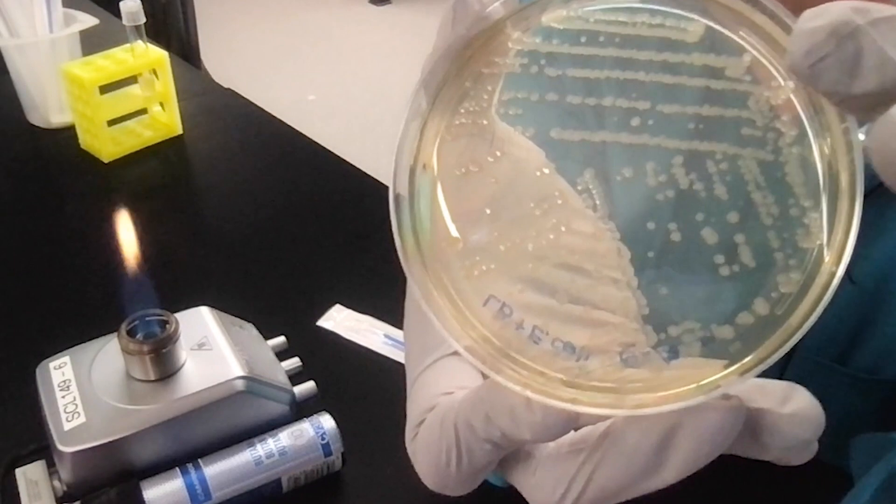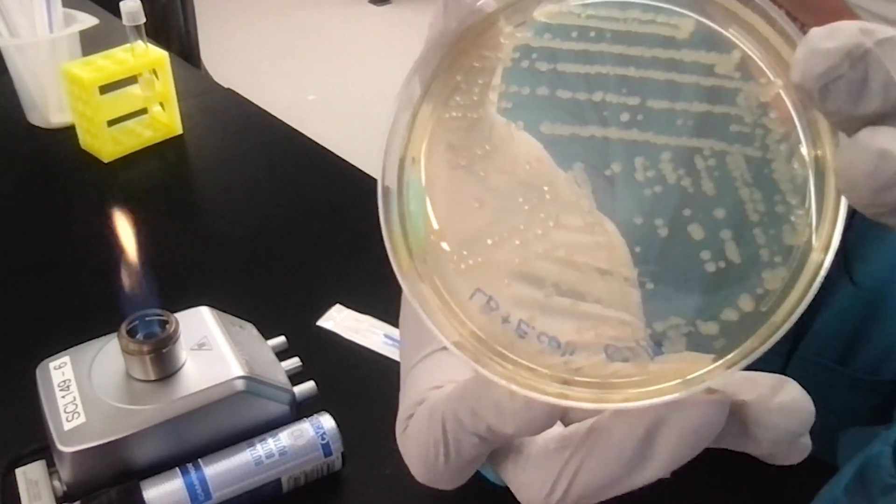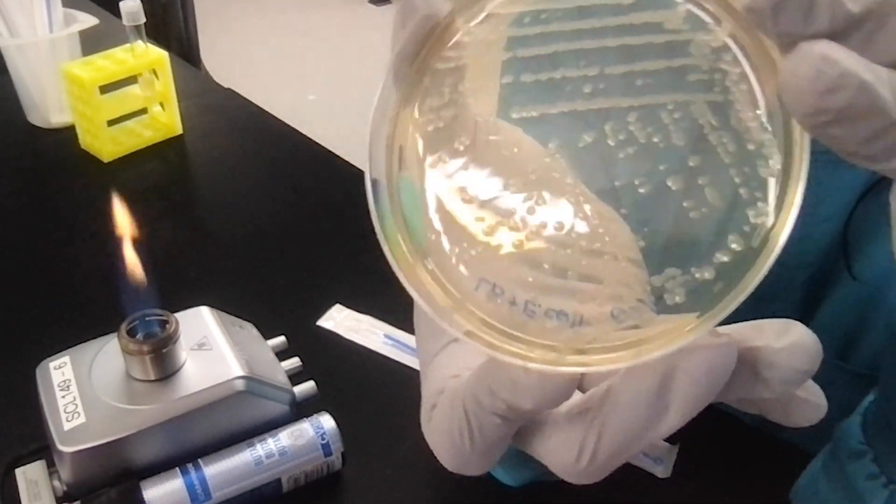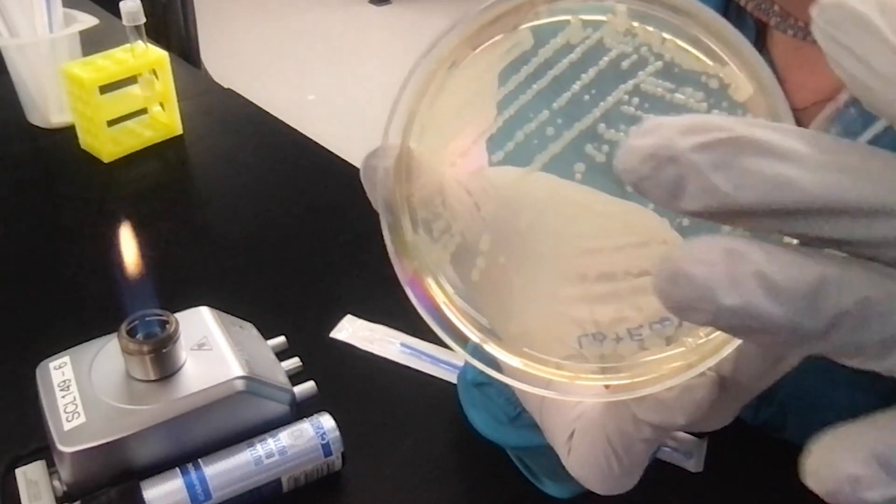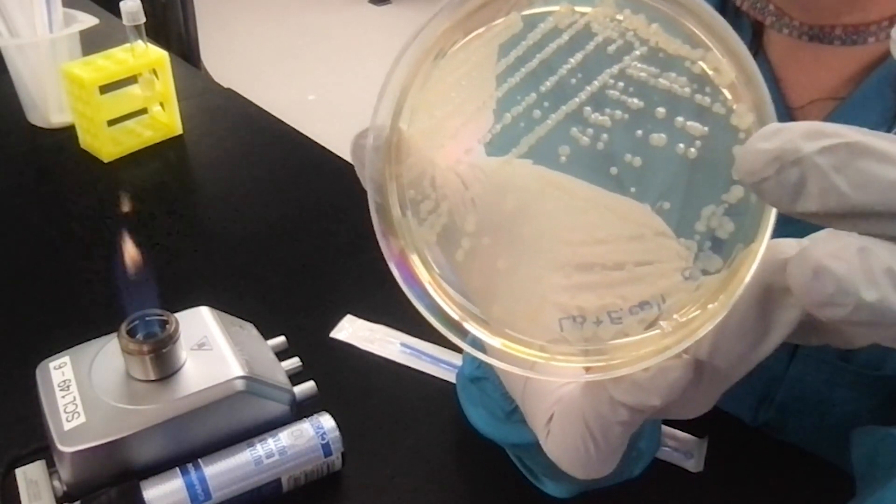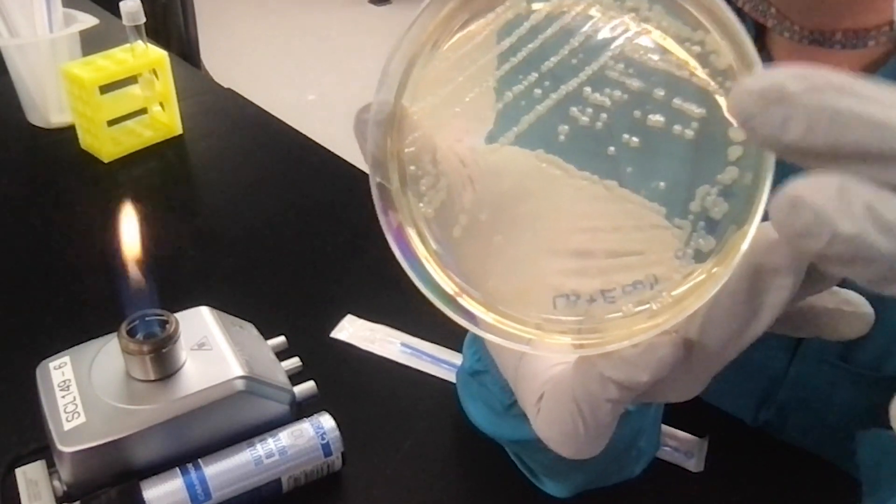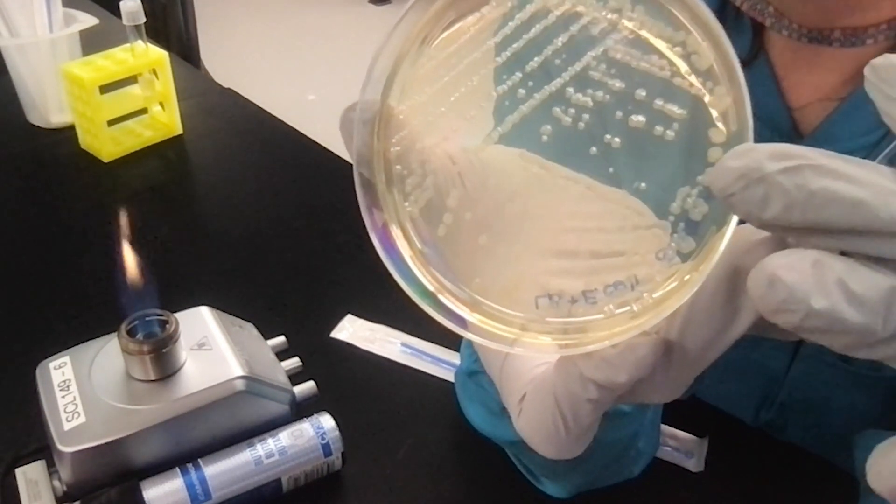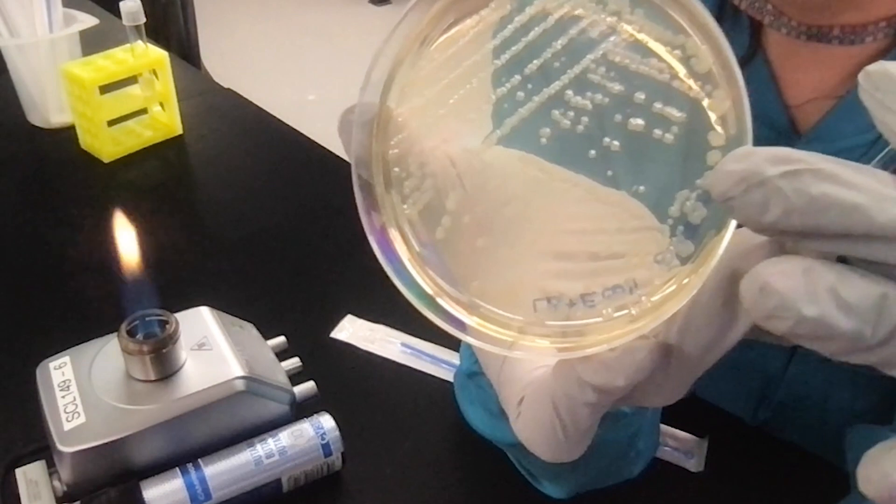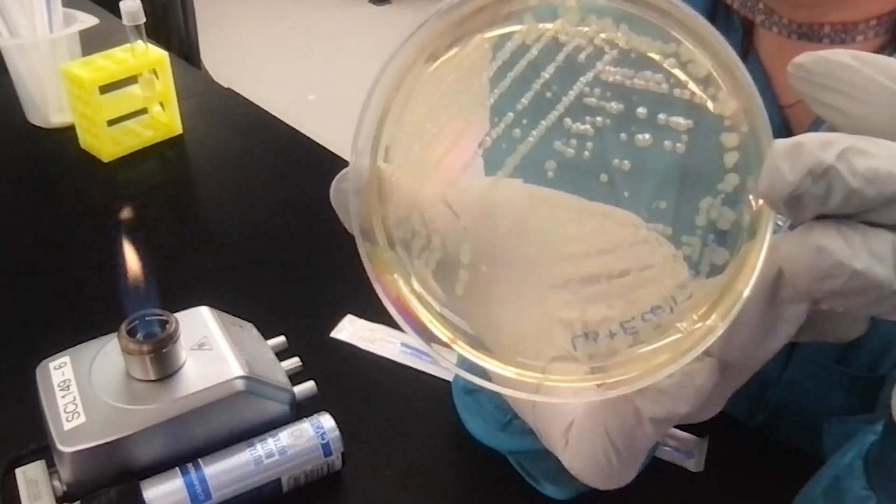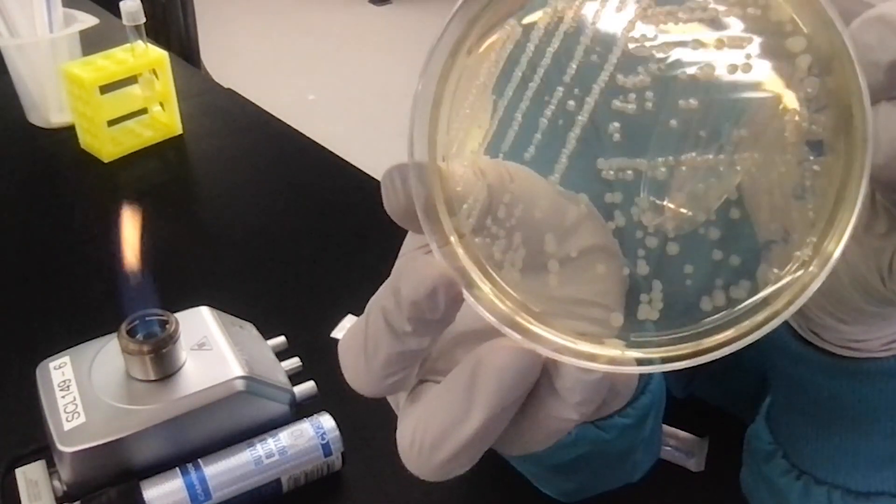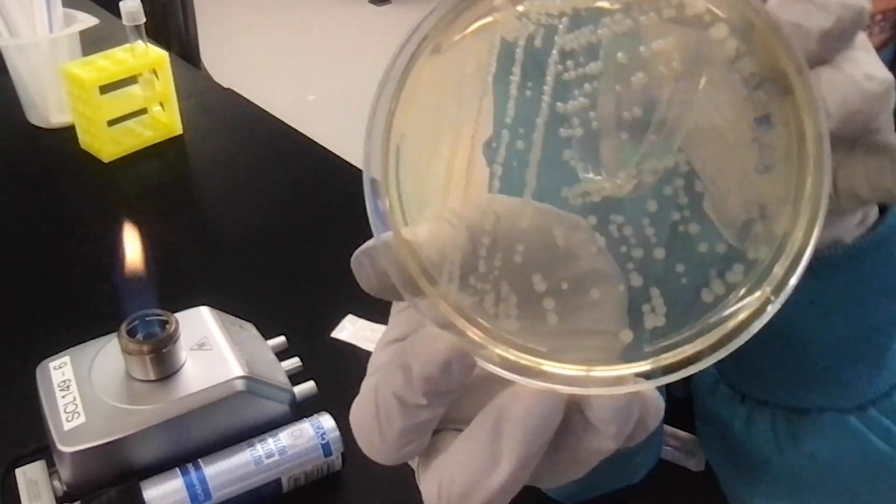But the purpose of the streaking method is to, as you make a new streak with a new inoculation loop or a toothpick, and you drag that through your initial streak, you are essentially, effectively, diluting out the concentration of those bacteria so that you now see nice, distinct, discrete, single colonies.